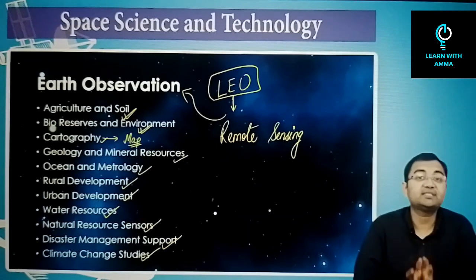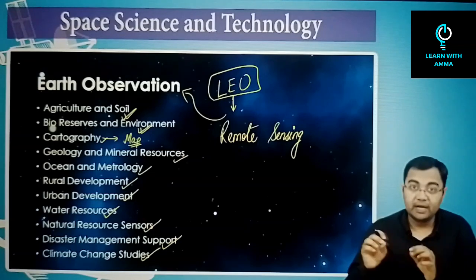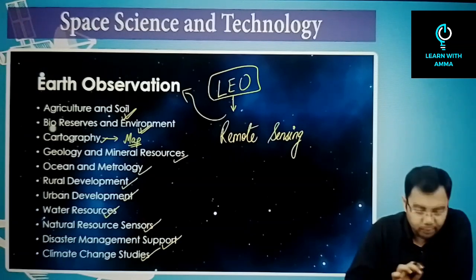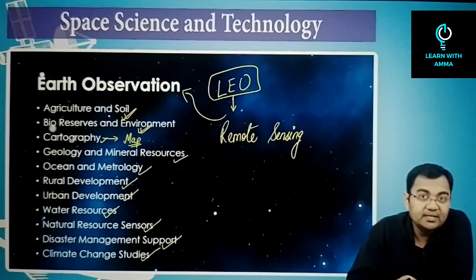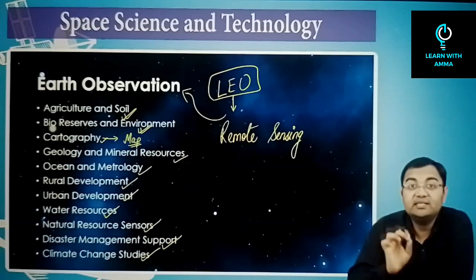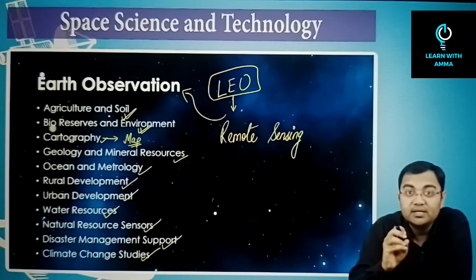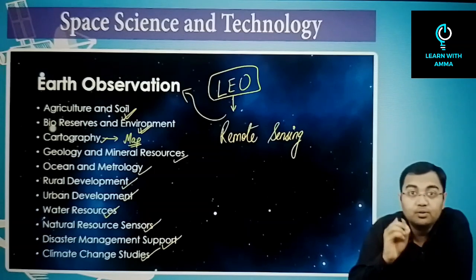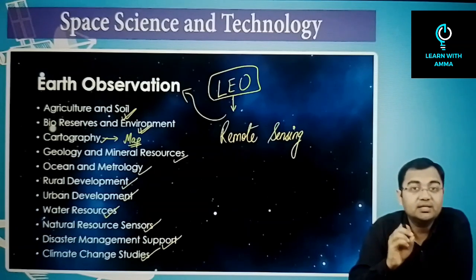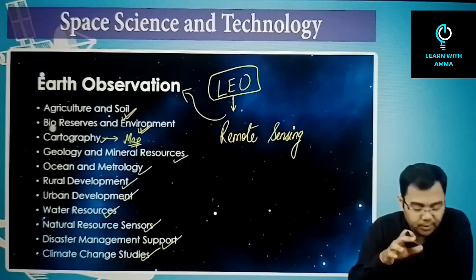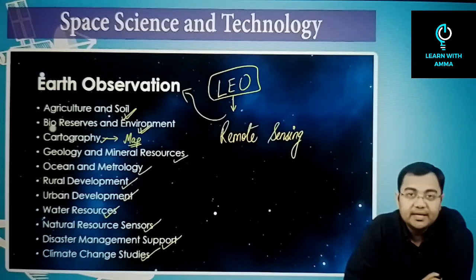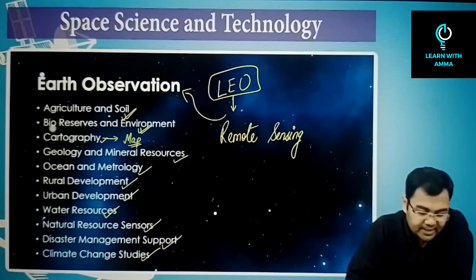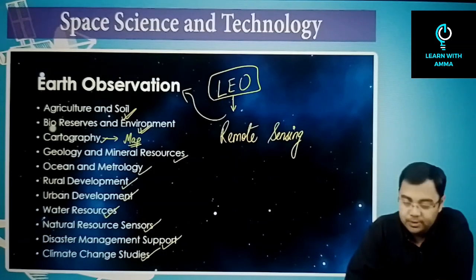All these applications are possible because low earth orbit satellites are very near to the earth. They are able to observe the earth and take pictures in very high resolution. So from an application standpoint, all these uses are served by satellites placed in low earth orbit.